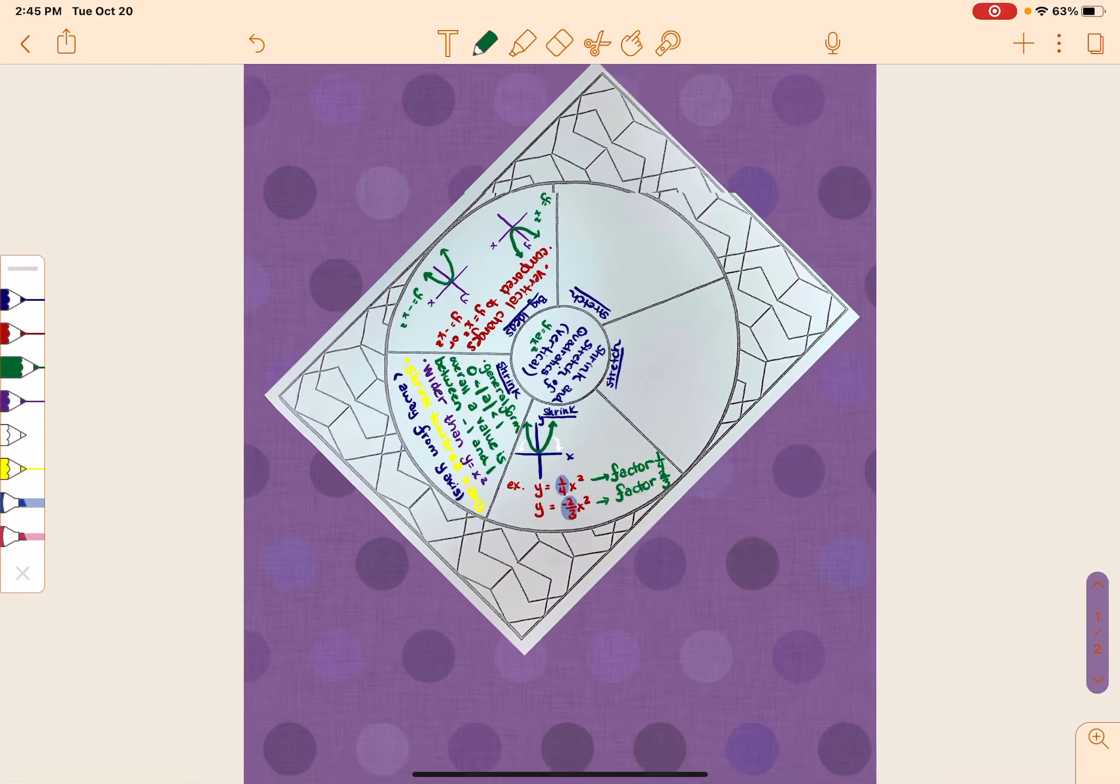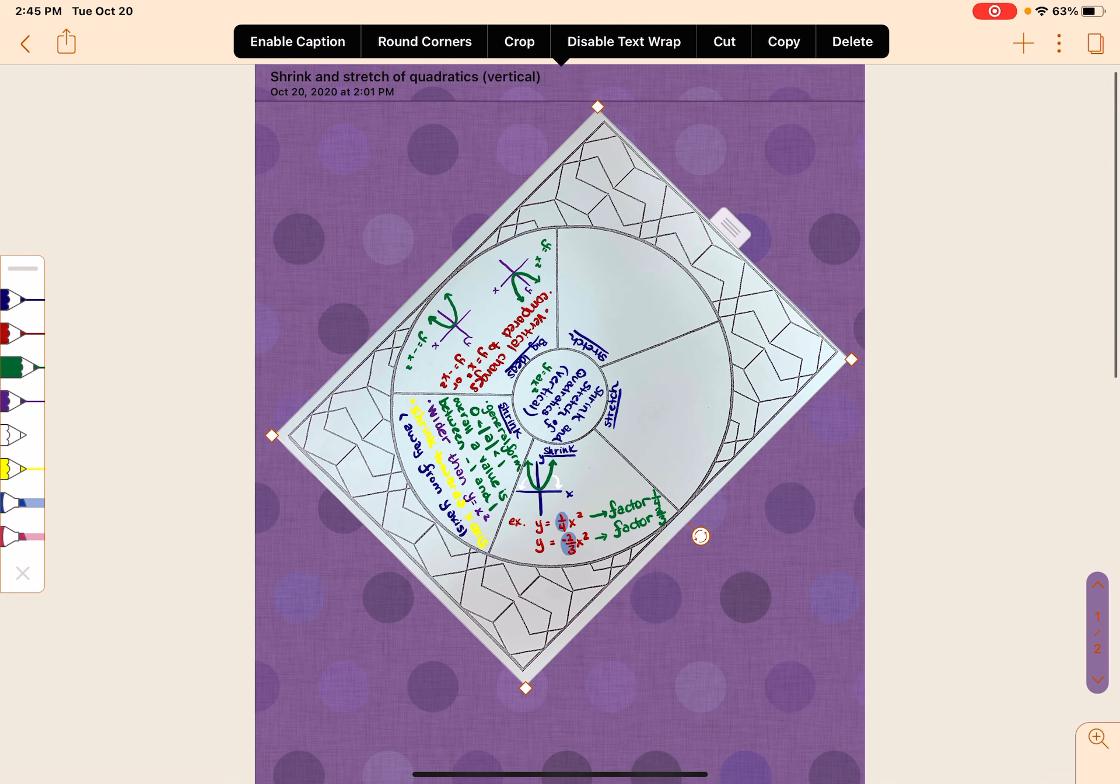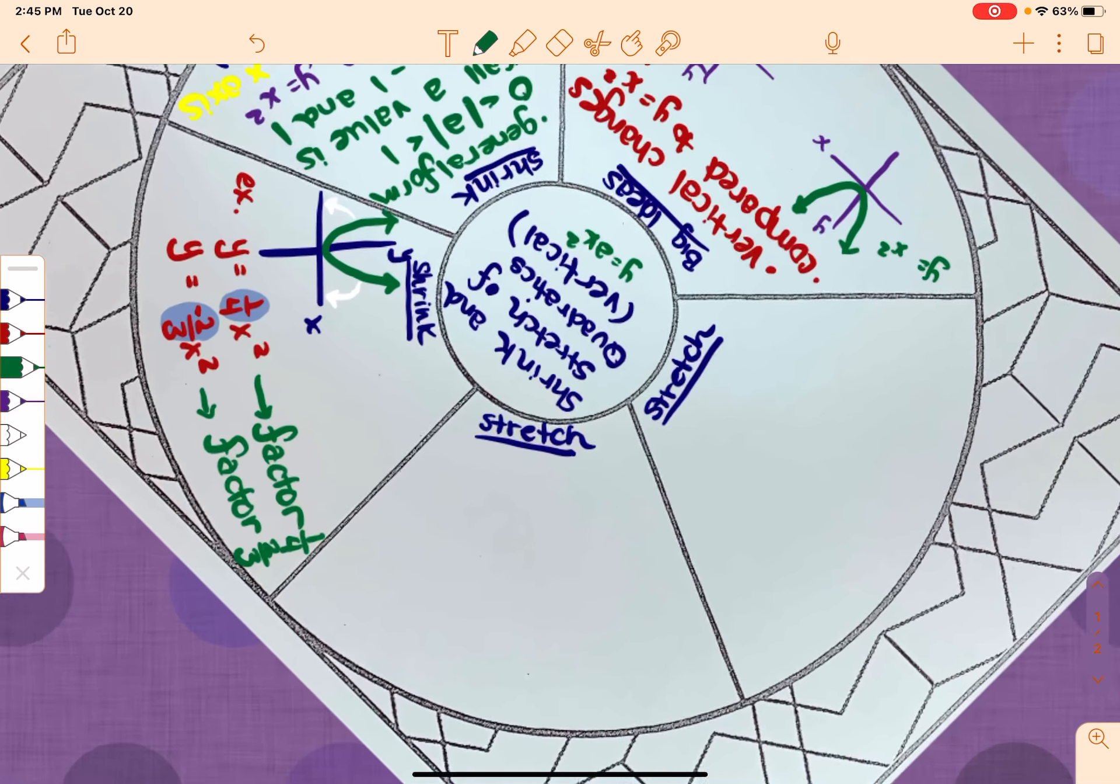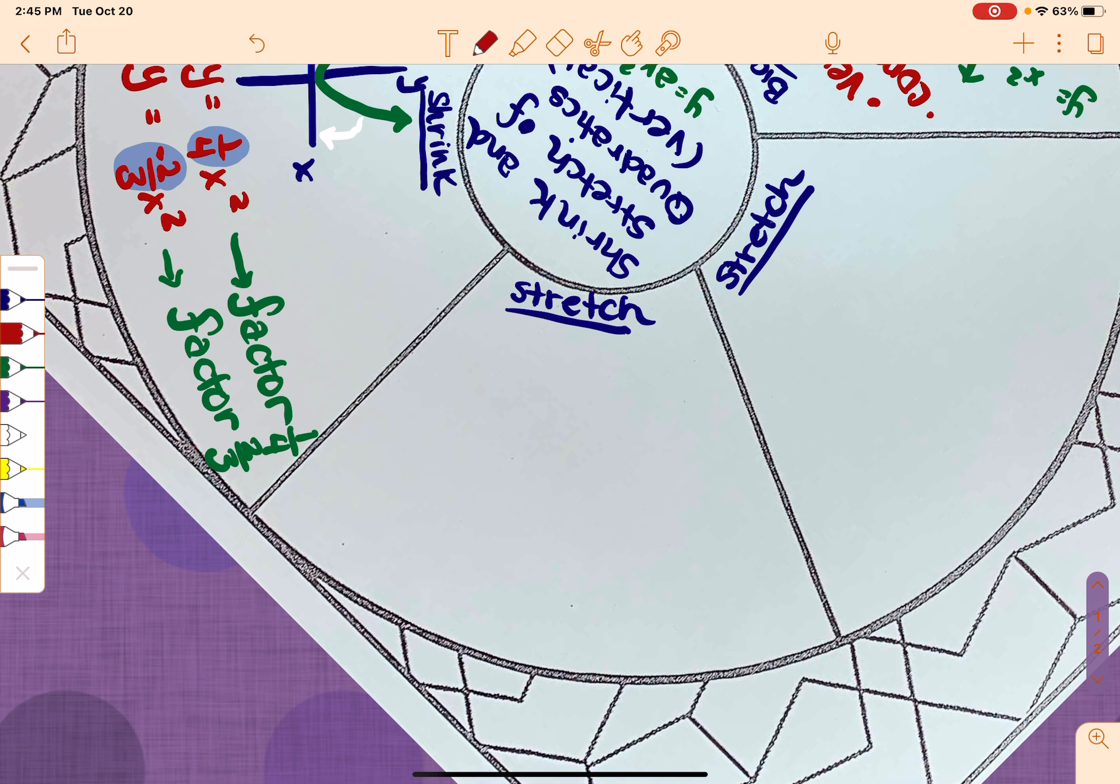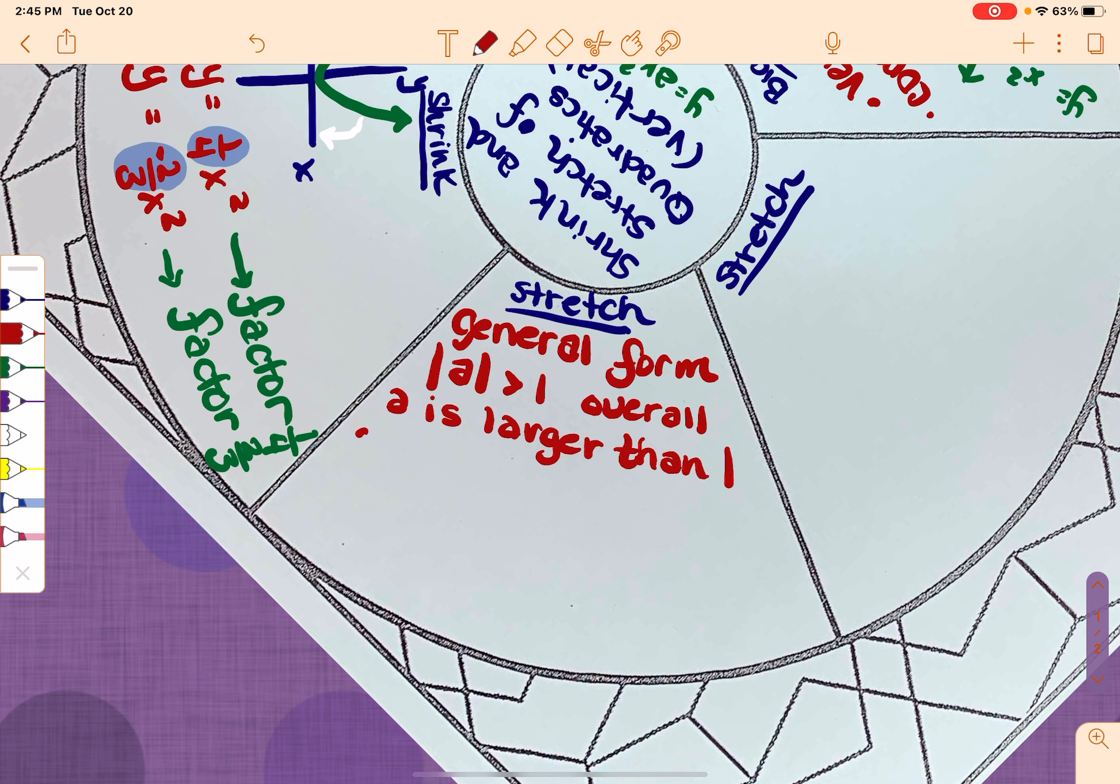Let's talk about stretch. So if it's a stretch, in the general form that we have, the absolute value of A would have to be greater than 1, which means overall A is larger than 1 or A is smaller than negative 1. Those are kind of the big pieces.